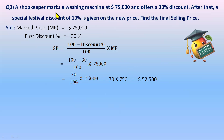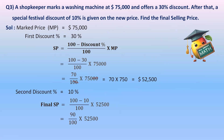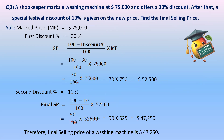Now the special 10% discount is applied on the new price of 52,500, not the original mark price. Using the formula again: (100 − 10) / 100 × 52,500 = 90/100 × 52,500. Canceling zeros: 90 × 525 = 47,250 rupees. Therefore, the final selling price of the washing machine is 47,250 rupees.